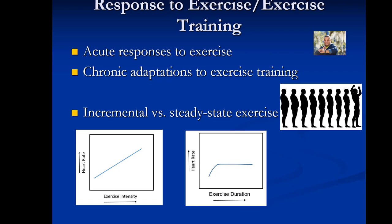The body's responses to exercise can be classified into two types. Acute responses describe how the body responds during an exercise bout — for example, heart rate increases during aerobic exercise. Chronic adaptations describe how the body adapts to exercise training over time — for example, after two months of training there may be an increase in muscle mass.